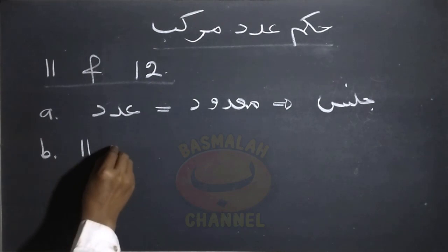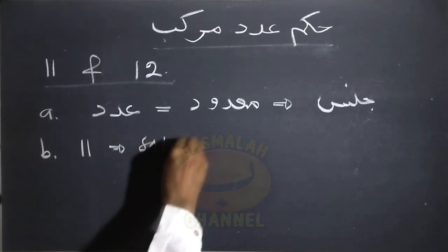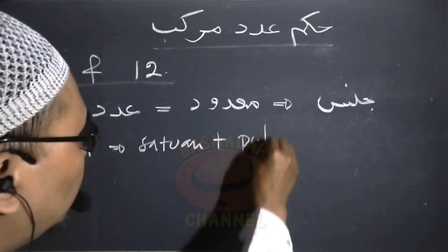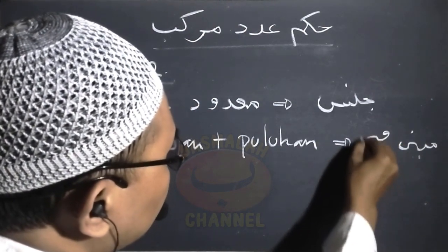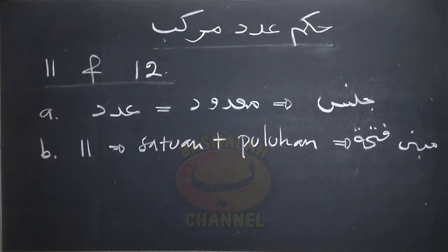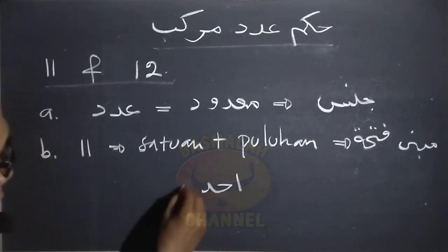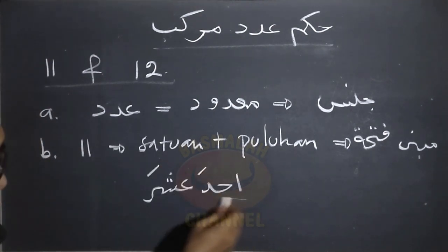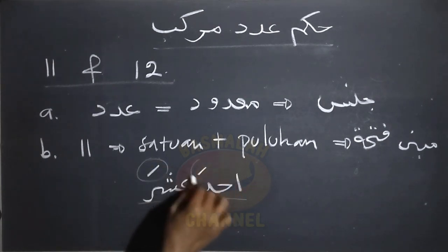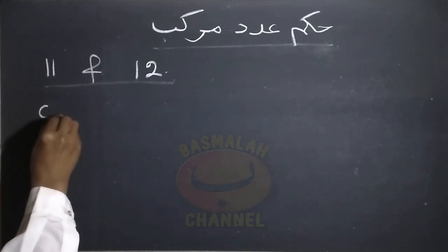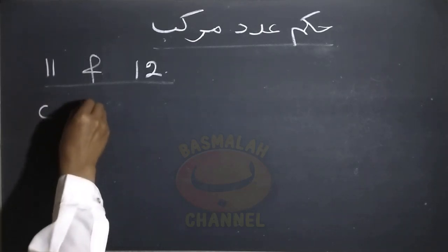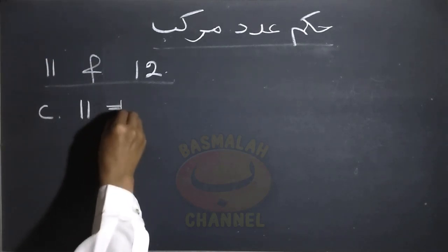Kemudian ketentuan yang kedua adalah untuk bilangan yang berupa bilangan sebelas, maka bilangan satuan dan bilangan puluhan ini semuanya dihukumi mabni fathah, baik dalam keadaan rafa', nasob, maupun jer. Jadi selamanya akan dibaca Ahadah Ashara, baik pada satuan maupun puluhan semuanya dimabnikan fathah dalam keadaan rafa', nasob, maupun jer. Jadi tidak akan berubah.